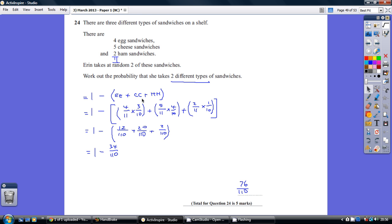So what's the probability of egg egg? Well, getting an egg is four out of eleven. Now once I've taken one egg sandwich, there are then three egg sandwiches left out of the remaining ten sandwiches. So that's why it's four out of eleven times three out of ten, because I've only got ten to choose from having taken the initial egg sandwich.